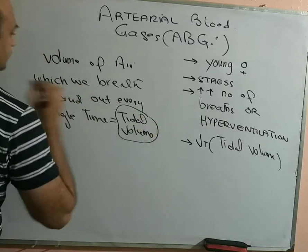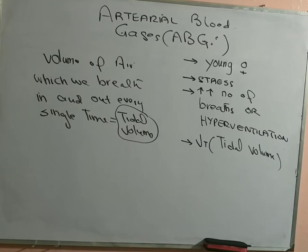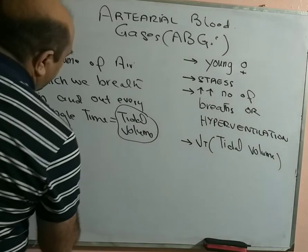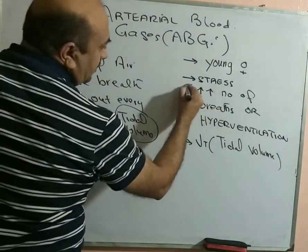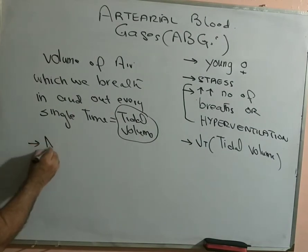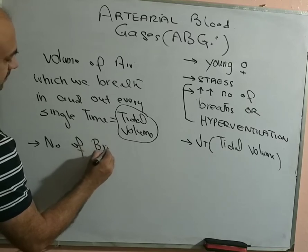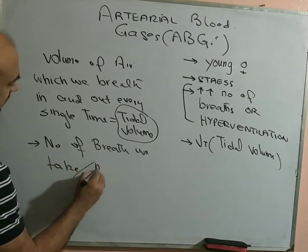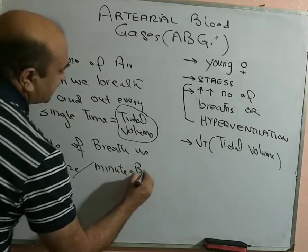This is a very important concept. Those patients who have gone into hysteric spells have a higher tidal volume. Tidal volume is the volume of air which we breathe in and out every single time. These patients not only have more breaths, they also have a higher tidal volume. The number of breaths we take per minute is known as respiratory rate.